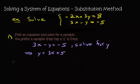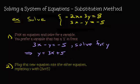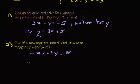Plug this new equation into the other equation. The other equation is negative 2x plus 3y equals 8. We're going to plug that in, replacing the y with 3x plus 5. Let's write down the other equation: negative 2x plus 3y equals 8. Then we're going to replace the y with 3x plus 5.